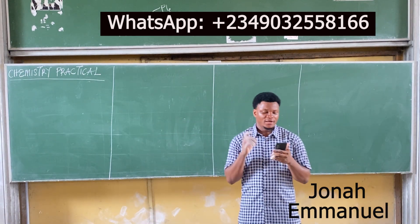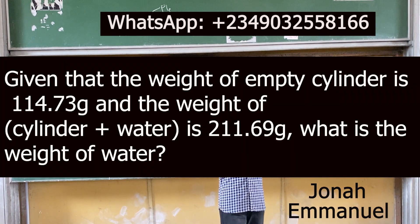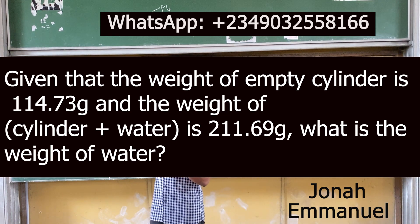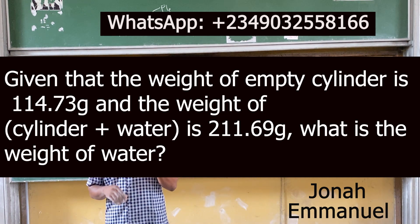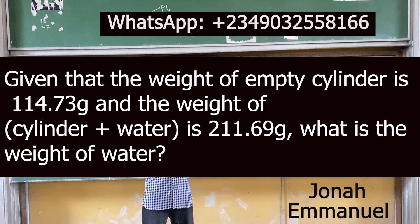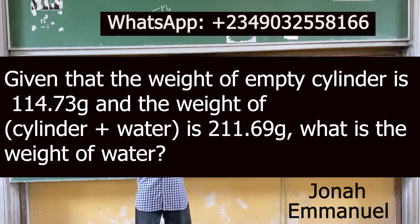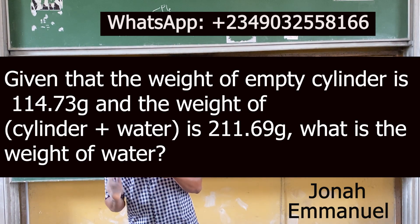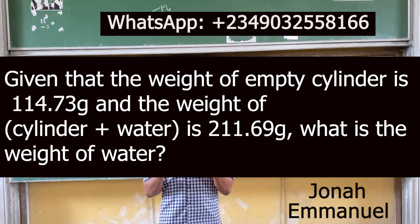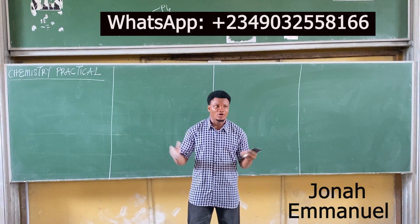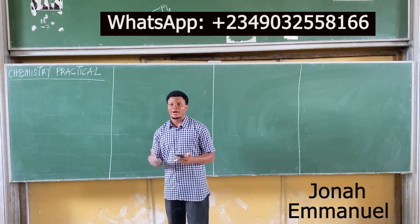Sample question 2. Given that the weight of an empty cylinder is 114.73 grams, and the weight of cylinder plus water is 211.69 grams, what is the weight of water? That's quite simple.